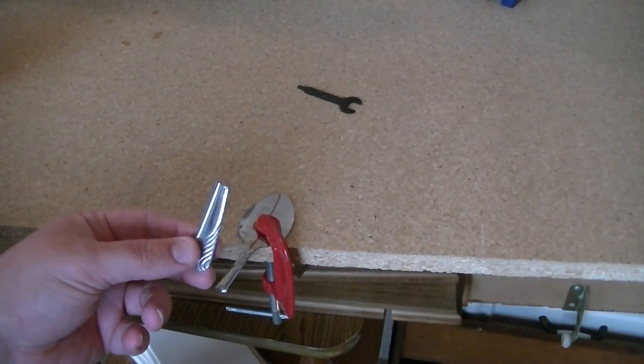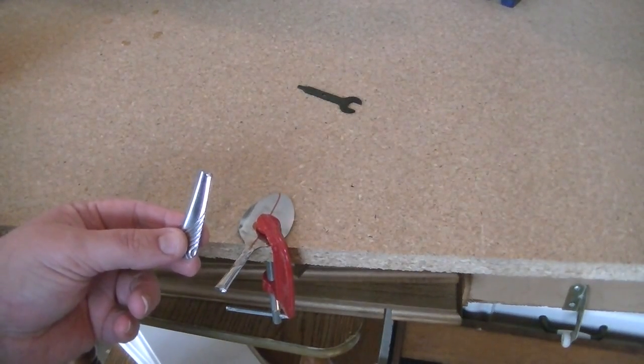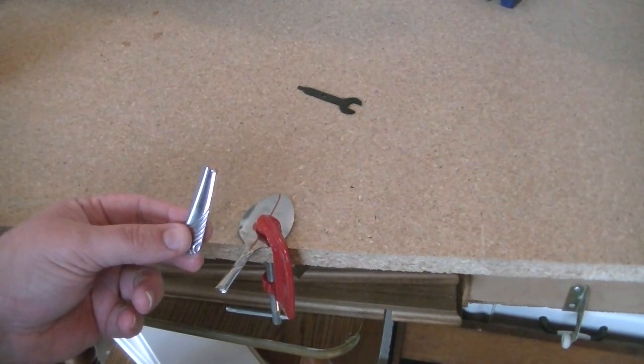And there you have it. That's how you cut the handle off of your spoon. Stay tuned for future videos where I'll go over things like grinding and sanding and using your Dremel on other types of materials.